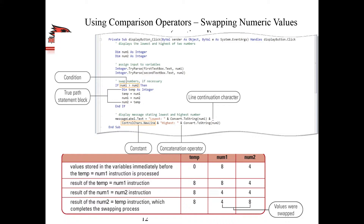If swapping is necessary - that is, if num1 is greater than num2 - then we define another variable called temp, which is another integer. That is basically to temporarily store the value of num1. We assign the value of num1 into temp, then assign the value of num2 into num1, and then using temp, we get whatever was in num1 before into num2. Those three lines basically swap the two numbers from num1 to num2 and from num2 to num1 using temp.